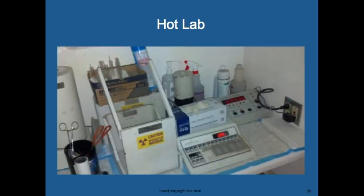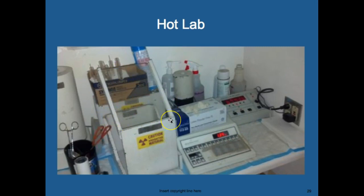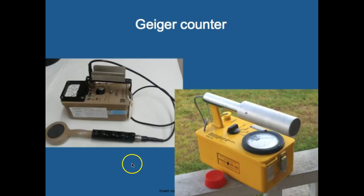Staff use Geiger counters to go through the hot lab and make sure there are no drips. They measure and draw up their isotope with hands inside a lead shield that protects the eyes and thyroid. After drawing up the isotope, they use a Geiger counter to scan the hospital halls, ensuring there are no drips or radioactive material on the ground giving unnecessary exposure to everyone.